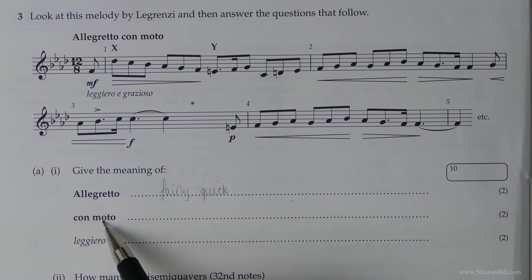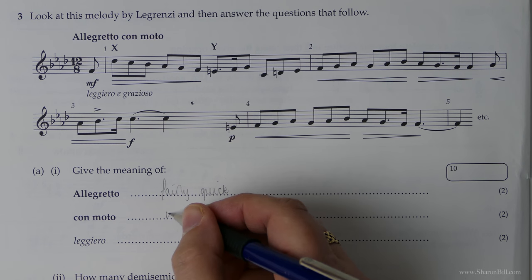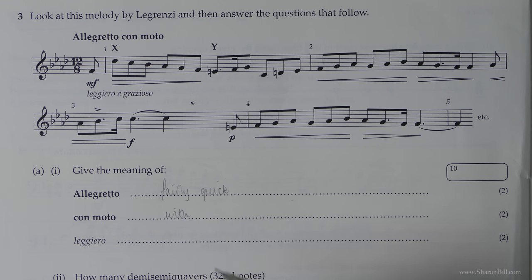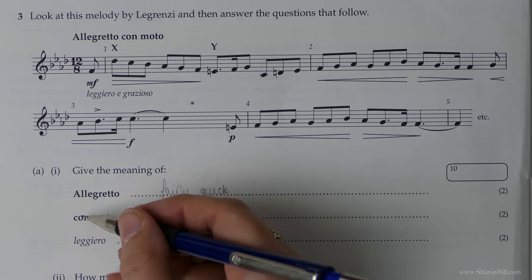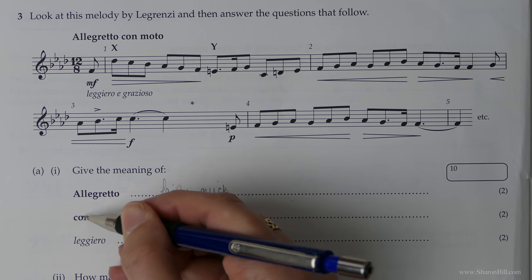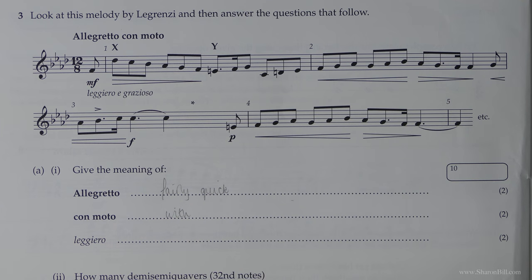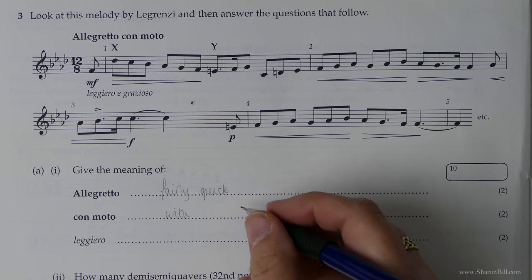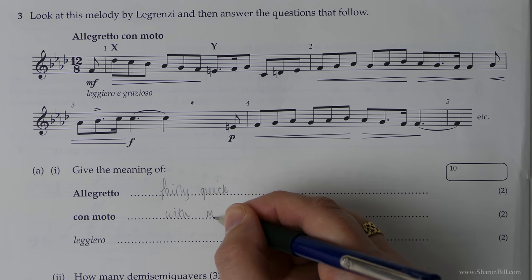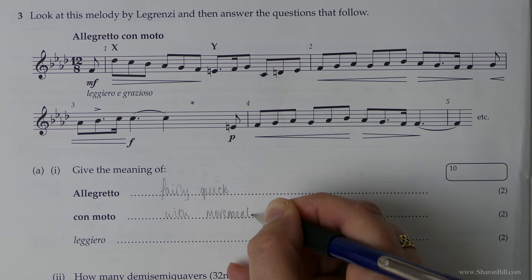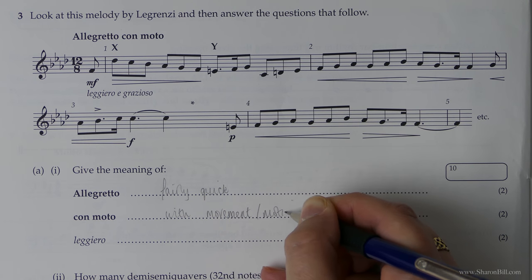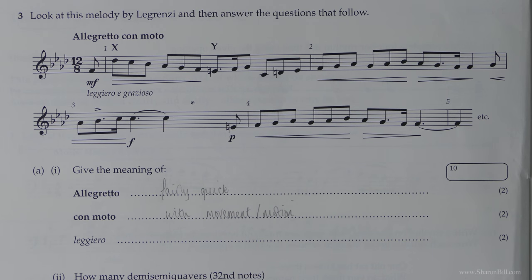Con moto. There are two words so we need to make sure that we explain both of those. So con is with. That's just a linking word. And then moto means motion or movement. Or you could say motion. Either one of those will describe the same thing.